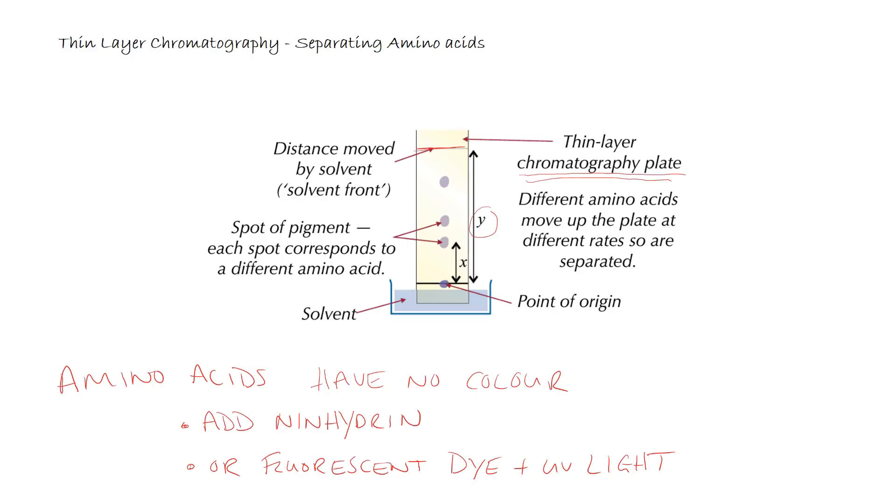Once you've done this you can then measure the distance that the amino acids have moved. Once you've measured the distance you can then calculate the distance travelled by the spot or the amino acid and divide it by the distance travelled by the solvent which is X divided by Y in our example here and you'll come up with a value. This value is determined as the RF or the retention factor and this retention factor is unique for a given amino acid in a given solvent and this gives us a way of starting to identify which amino acids we have present.